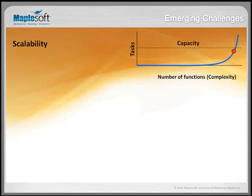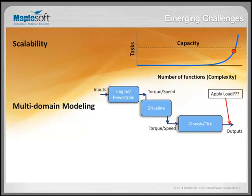Multi-domain modeling is particularly challenging. For example, if I model an engine and powertrain with some inputs, I might output torque and speed into my driveline, which outputs torque and speed into my chassis and tire — a flow from input to output. But if I want to apply a load at the output, that completely changes the topology of my model. Now I have to feed that back down the chain, because the applied load acts as an input even though it occurs at the output. This is the whole issue of causal versus acausal modeling, which can be a huge time waster. Tools like MapleSim are able to take care of this for you.